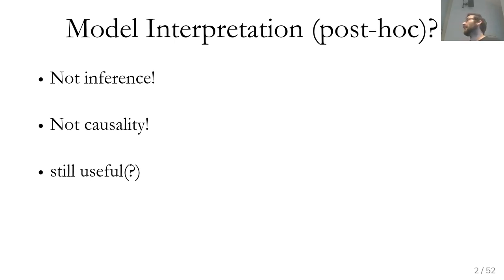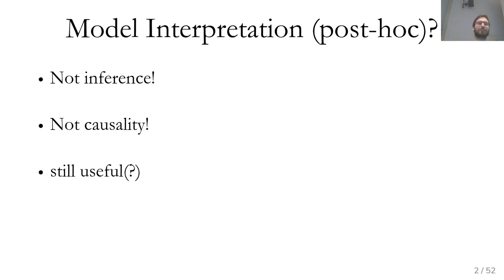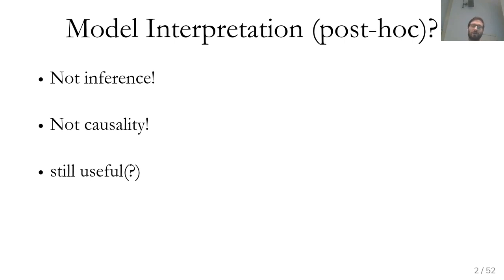If you want to make causal interpretations saying something causes something else, it's very dependent on how you collected the data. There's commonly a whole class on causal inference, and if you want to do causal inference, you need to understand causal inference. Any of the techniques we're talking about today are not causal inference — they won't allow you to say X causes Y. However, they might still be useful in that they might inform experiments you want to do or give you some idea of how the model works.